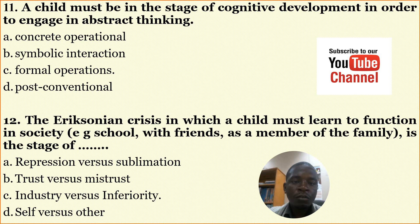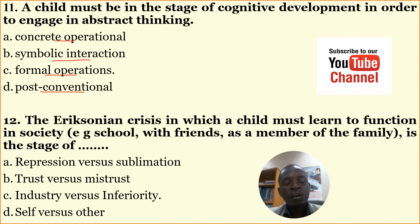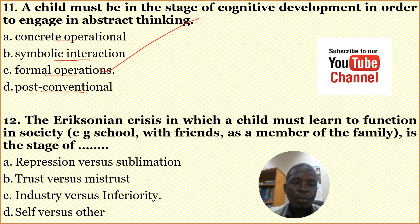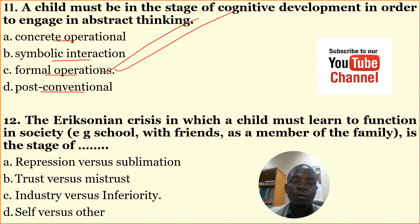Number eleven: A child must be in which stage of cognitive development in order to engage in abstract thinking? A: concrete operational, B: symbolic interaction, C: formal operations, D: post-conventional. The correct answer is formal operations. If a child is able to engage in abstract thinking, that child should be operating under formal operations.